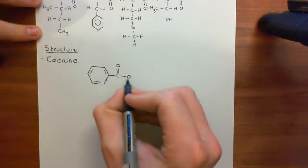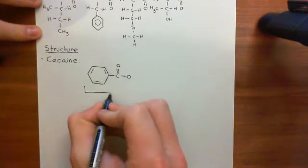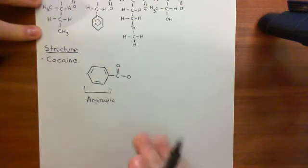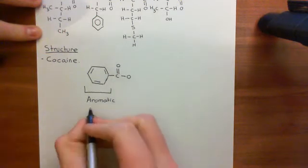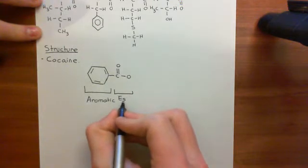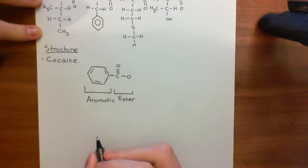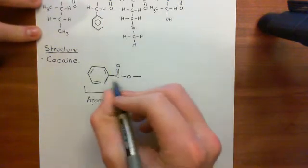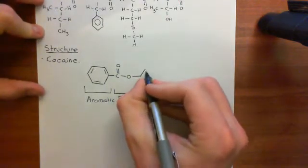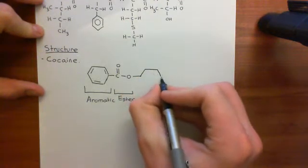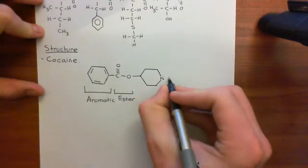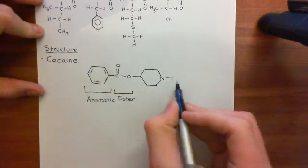You then have an ester link here, and this is another general feature of local anesthetic molecules. You have an aromatic portion generally, and this is an aromatic portion. Then we're going to have an ester portion here, and then the other key portion you're going to have is some sort of basic portion. In the case of cocaine, you have a six-membered ring where one of the members is a nitrogen, and that nitrogen then has a methyl group coming off.